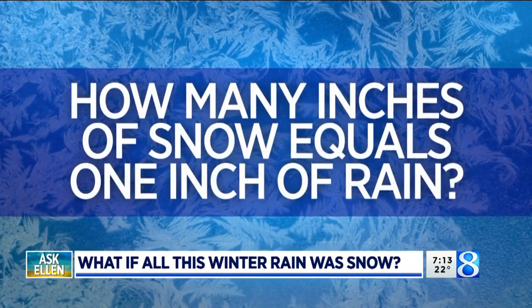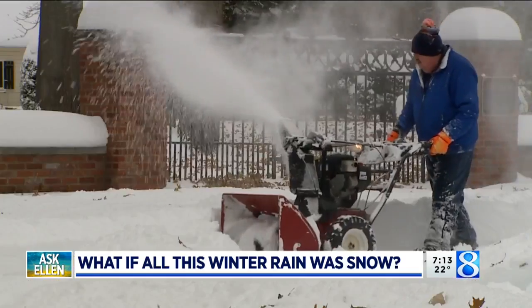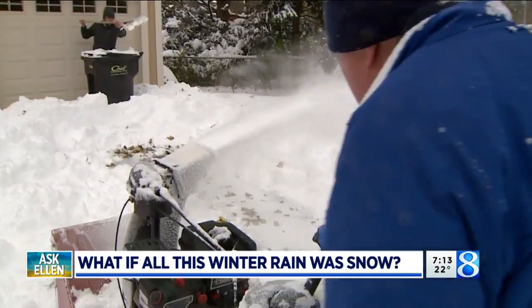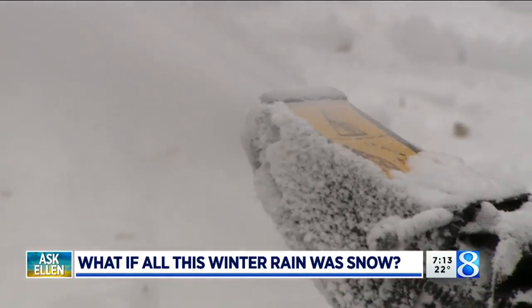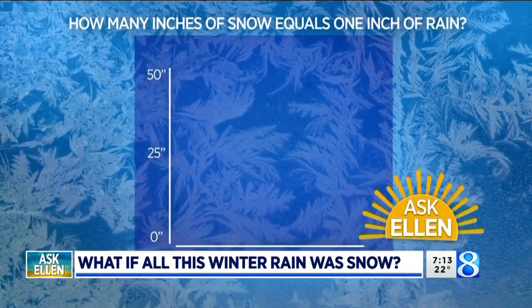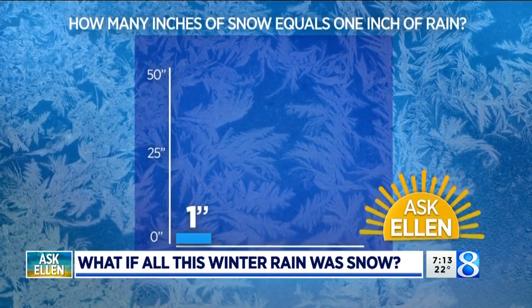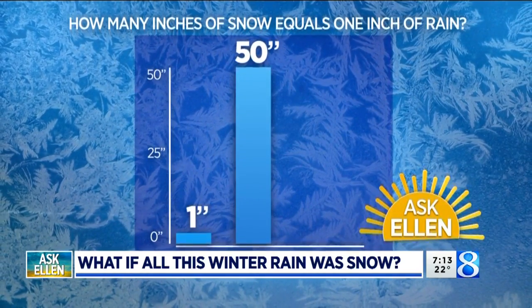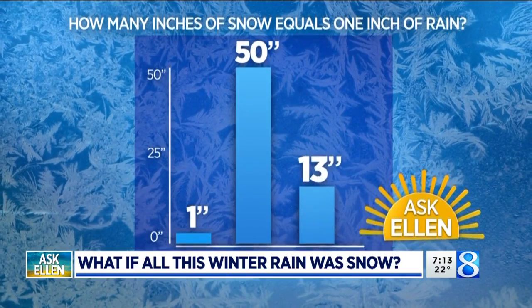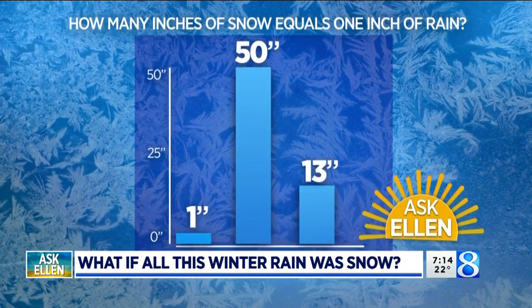The next thing we have to talk about is the rain-to-snow ratio — basically how much water makes how much snow. This isn't a number set in stone. In fact, the rain-to-snow ratio can vary widely depending on current conditions. Sometimes an inch of water can make as little as two inches of sleet or as much as 50 inches of very dry, fluffy snow. Usually in the U.S., one inch of rain makes about 13 inches of snow, according to the National Severe Storms Laboratory. So you can see a huge range.